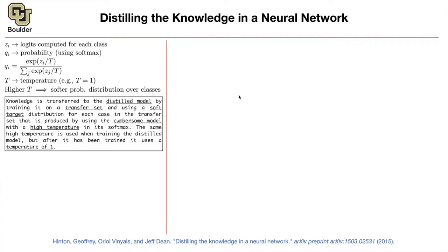Here is the full process: you train a very large network with temperature equal to 1. Once trained, you generate artificial data with a higher temperature — say 100. You train your smaller network on this artificial data with the same temperature of 100, and then go back to temperature equal to 1 for prediction.